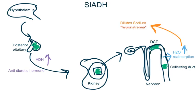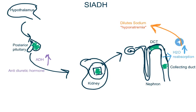In SIADH, the secretion of antidiuretic hormone is inappropriately high, due to which there is increased reabsorption of water. This excess water retention then dilutes sodium, which means that it decreases the level of sodium in the blood, causing hyponatremia.